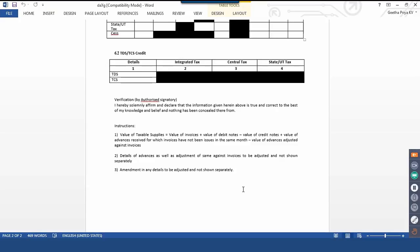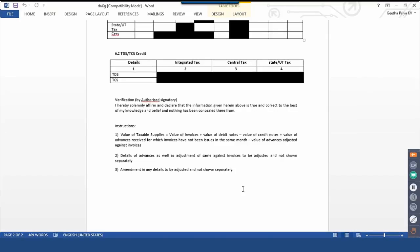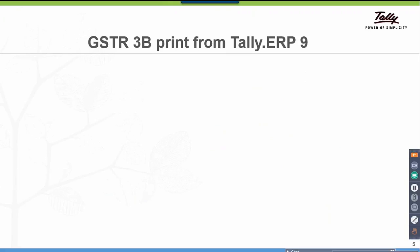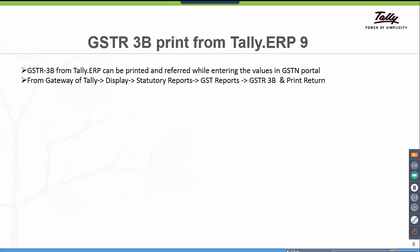The next step is to log on to the GSTN portal with your login credentials. Go to monthly return Form GSTR 3B, prepare online, enter all the values, and proceed. The GSTR 3B print from Tally RP9 is helpful to refer while entering the values in the GSTN portal. The navigation is: Gateway of Tally, Display, Statutory Reports, GST Reports, GSTR 3B, and Print Return.